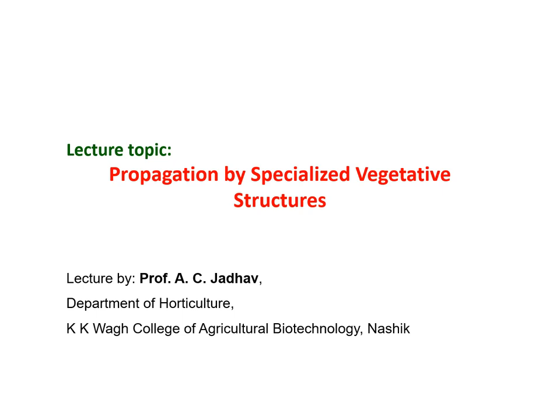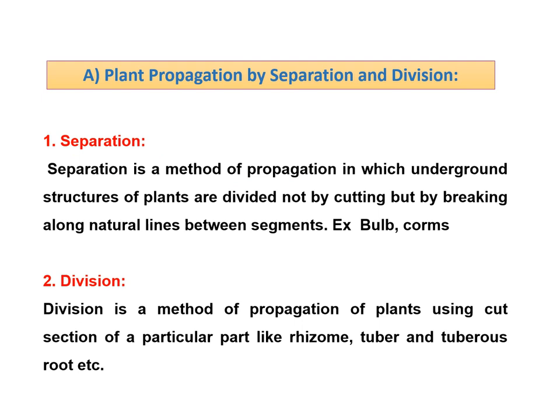In vegetative propagation, again as per the bifurcated methods, there are very important methods — that is, propagation by the specialized vegetative plant parts or structures. We are going to study the same topic: propagation by specialized vegetative plant parts. Many plants produce different types of specialized plant parts or structures which have nodes, internodes, or axillary buds, and with the help of such structures we can use them for further multiplication. These specialized plant parts or structures are again classified into separation and division.